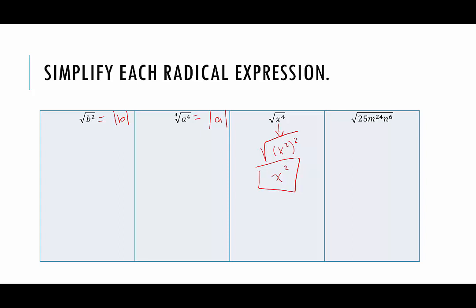In our last example here, we have the square root of 25m to the 24th, n to the 6th. Rewriting each piece as a perfect square: 25 is 5 squared, m to the 24th is m to the 12th squared, and n to the 6th is n cubed squared. The square root of 5 squared is 5, the square root of m to the 12th squared is m to the 12th — no absolute value needed because raising to the 12th power turns it positive. The square root of n cubed squared would be n cubed, but since n cubed can be negative, we need the absolute value of n cubed.